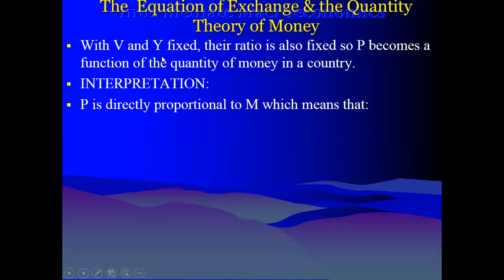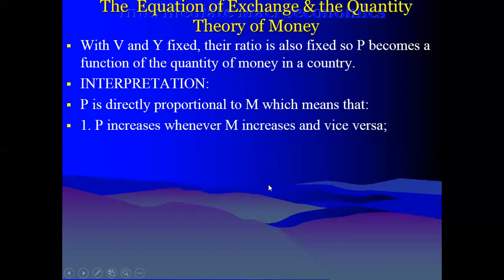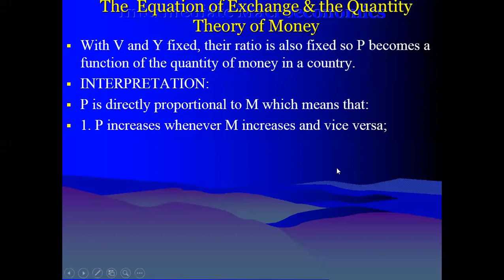So if V is fixed and Y is fixed, then P should be directly proportional to M. P = M × (V/Y), where V/Y will be a constant. So if that's the case, it means there is a direct relationship between price and M.